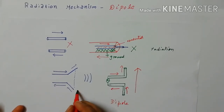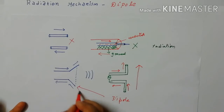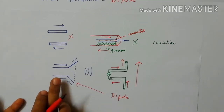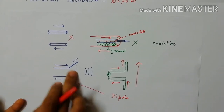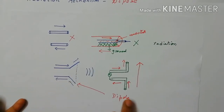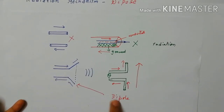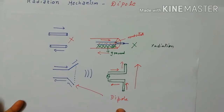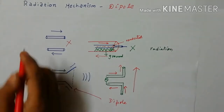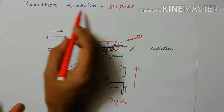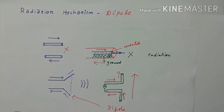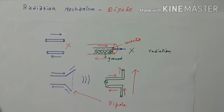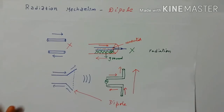This dipole is a remodification of the original structures, and that is the basis of the dipole. Now in this class we are going to see the radiation mechanism of this dipole.